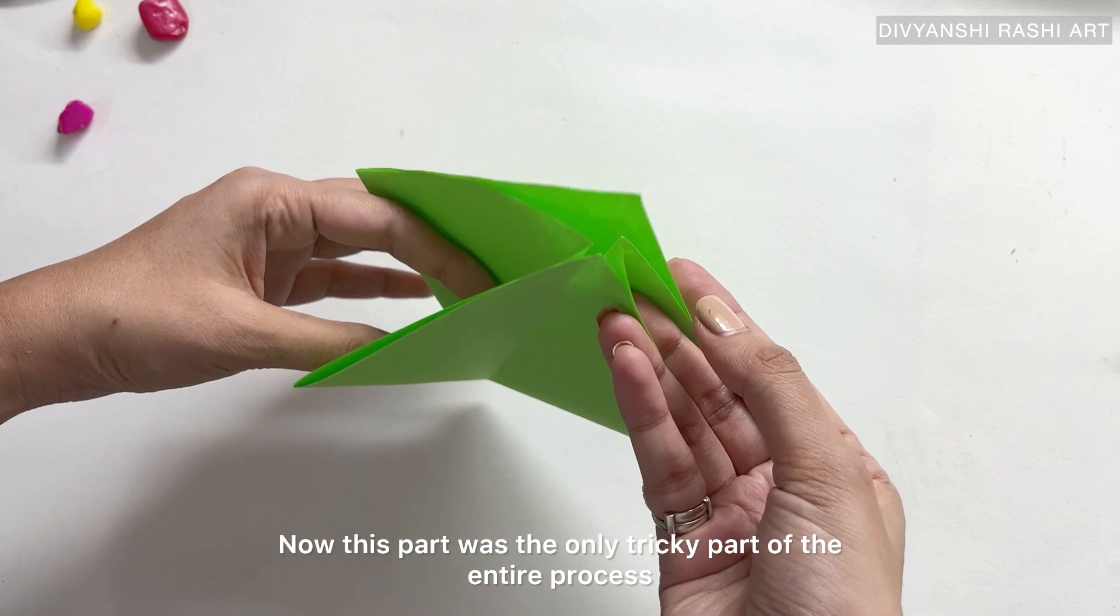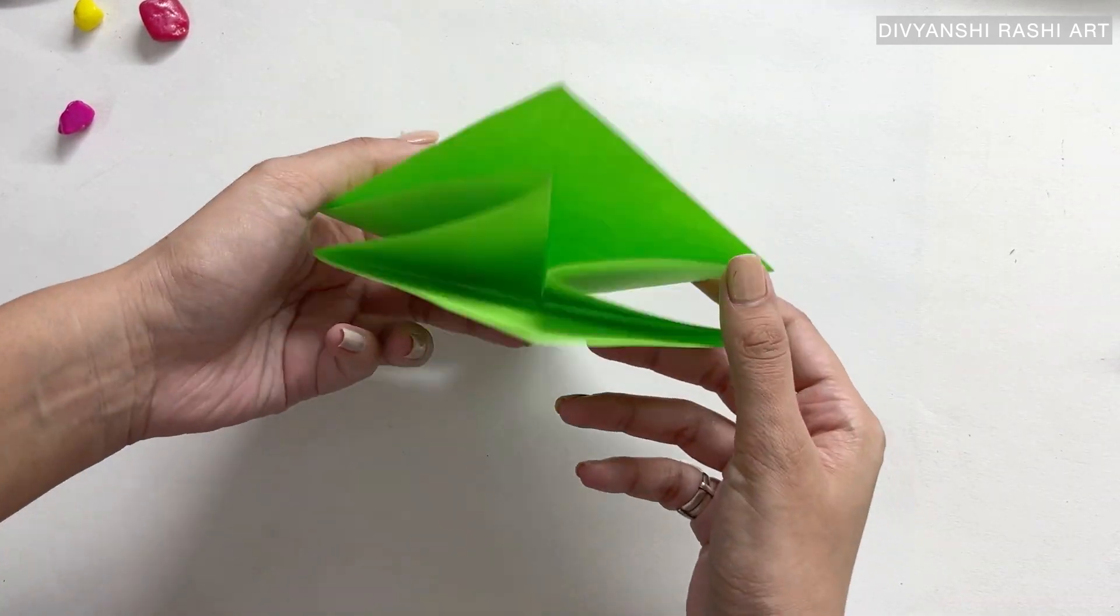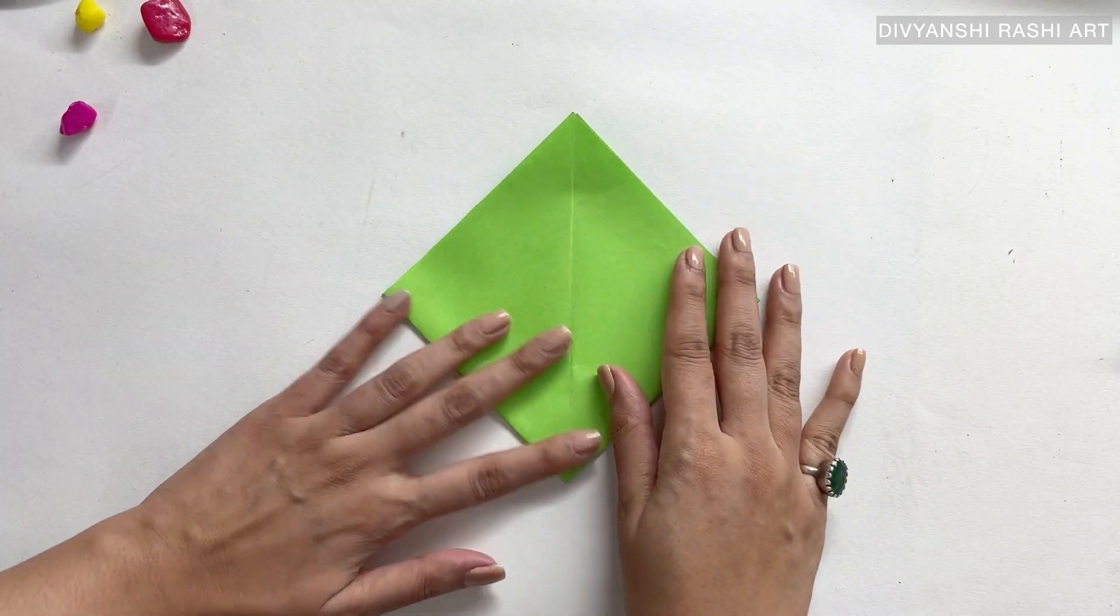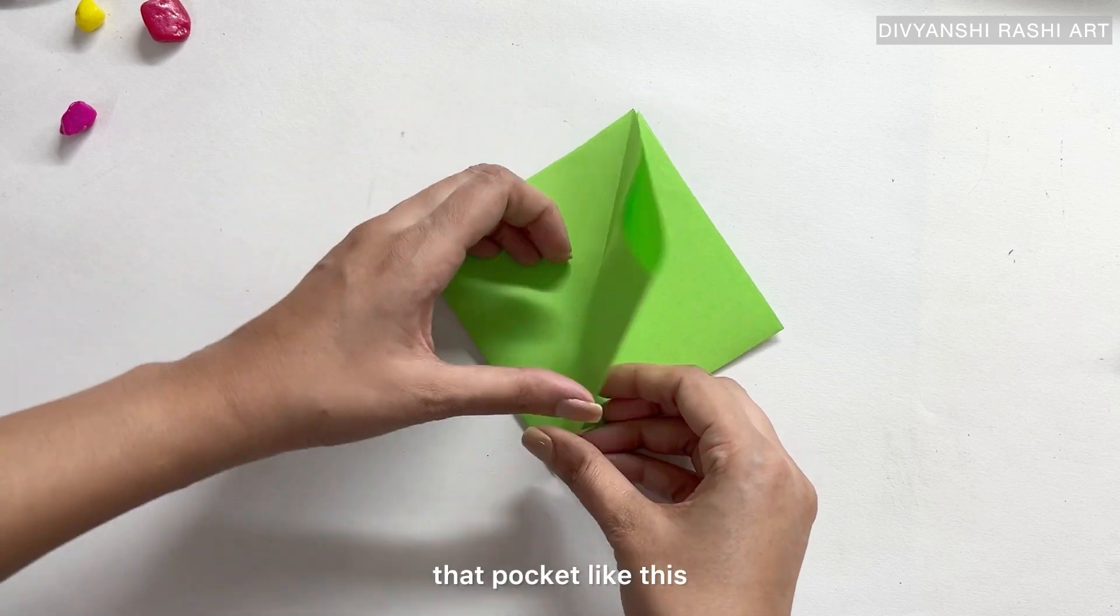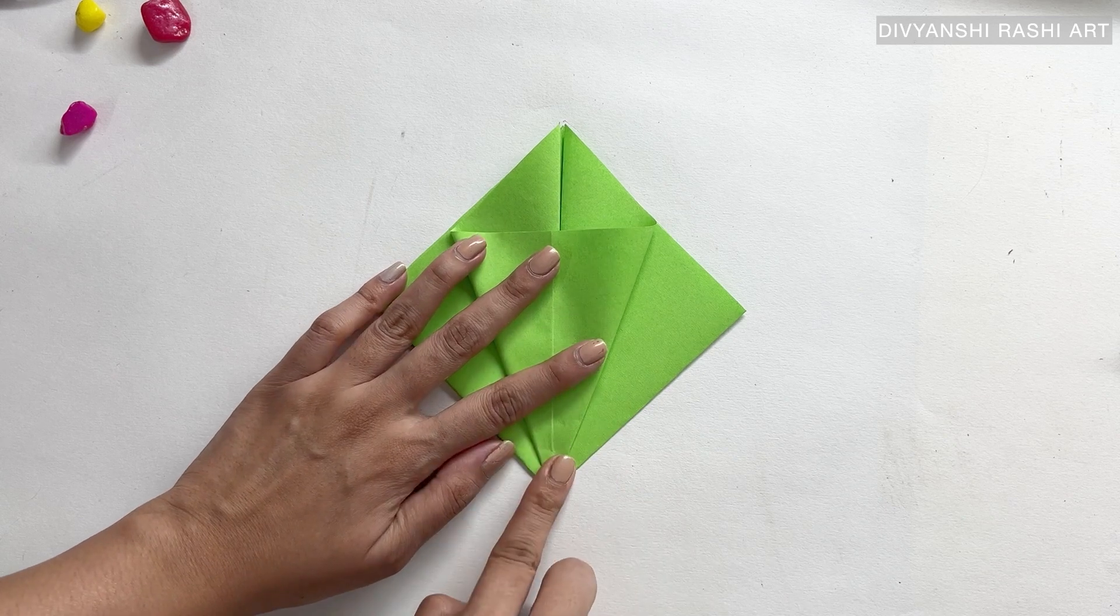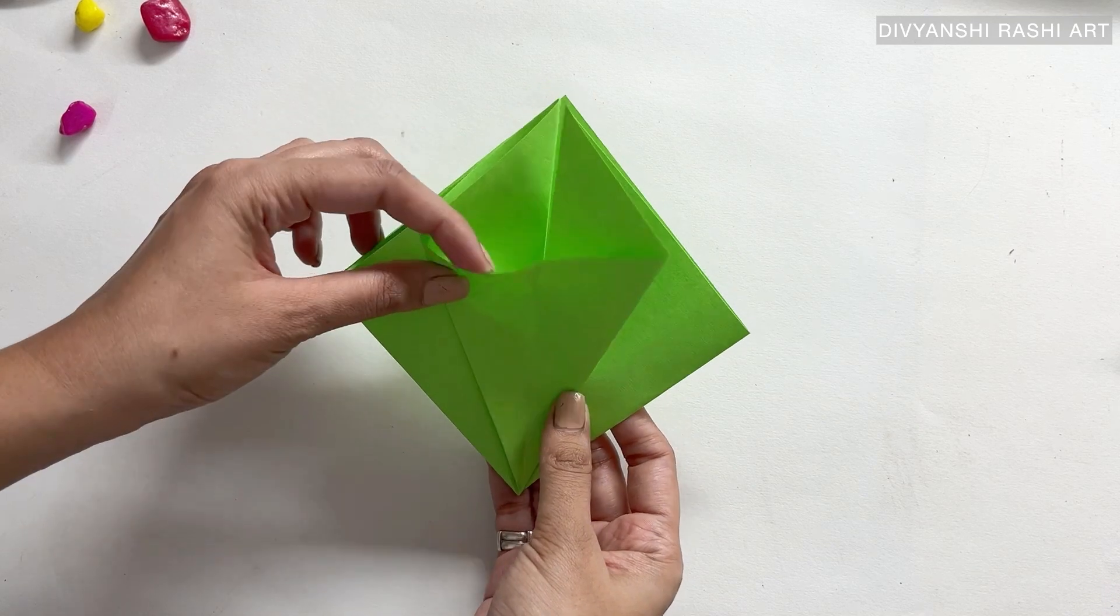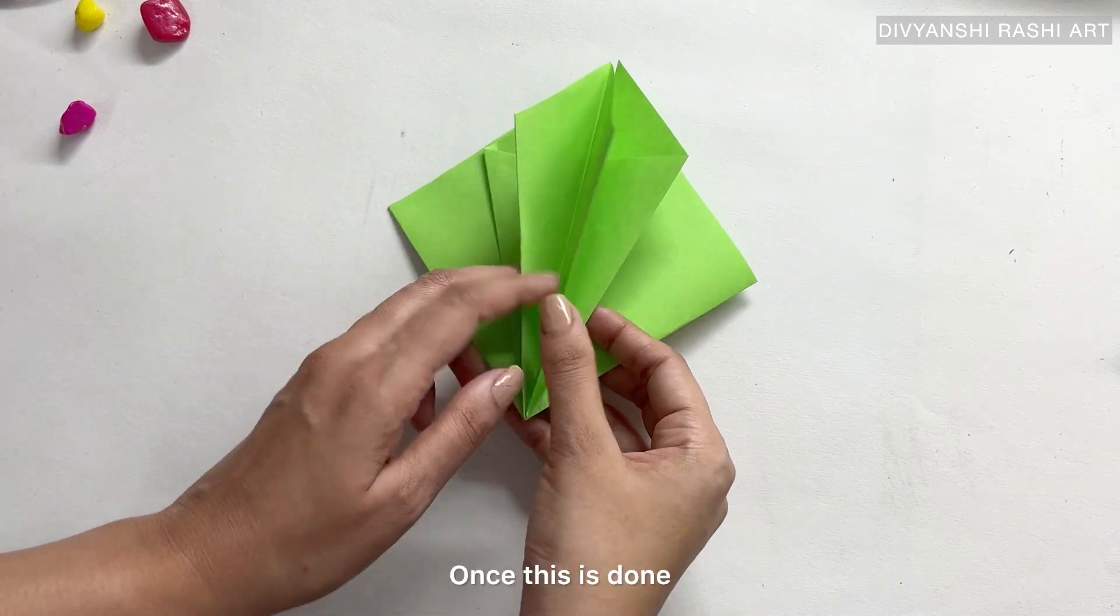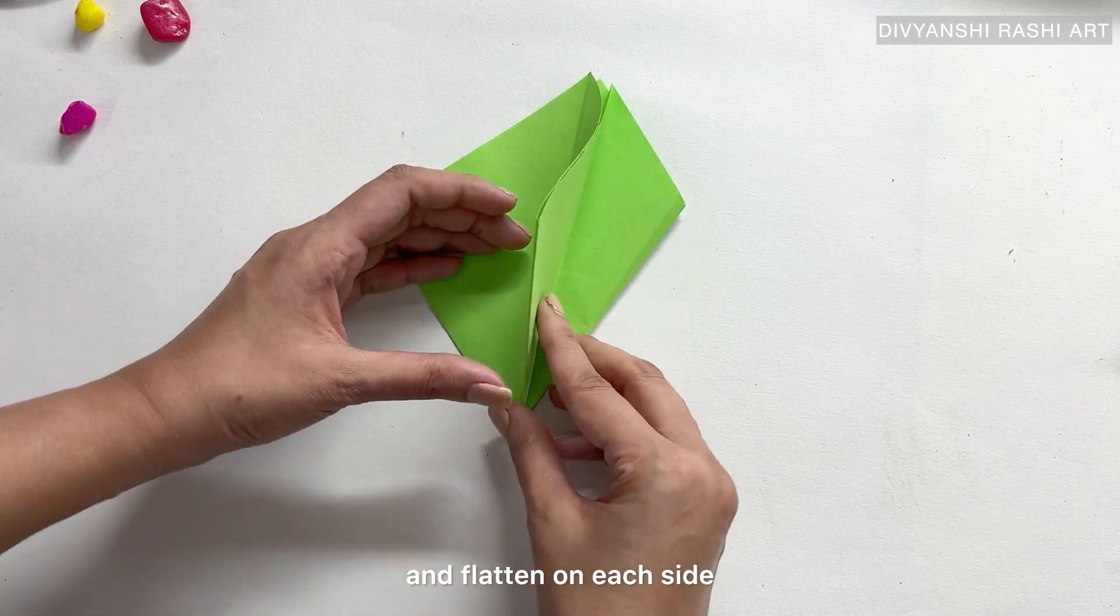Place this folded paper in such a way that the open side is up. Take each flap and open it to create a pocket, and then flatten that pocket like this. Repeat the same on the second flap. Once this is done, turn the paper upside down and create the same pockets and flatten on each side.